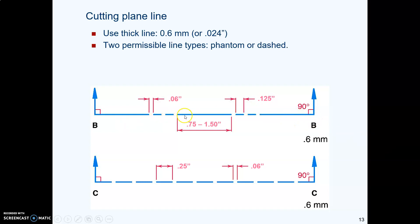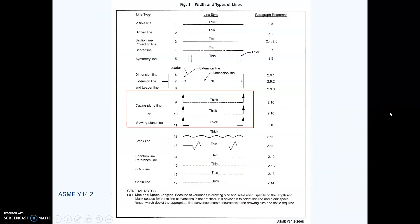In our drawing for our class, the cutting plane layer has a phantom line type in it. Here is the ASME standard showing us cutting plane lines. And notice they're labeling them thick. Whether you use a dashed or a phantom or just an arrow on each end, they're thick.